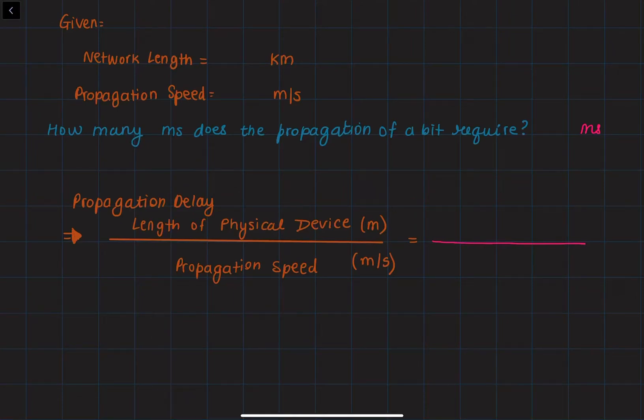In this problem, we are given that our network length is 466 kilometers. We are also given that our propagation speed is 2.8 × 10^8 meters per second. The question is asking us how many milliseconds does the propagation of a bit require?